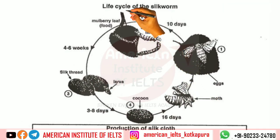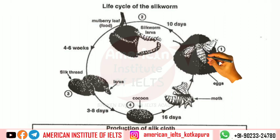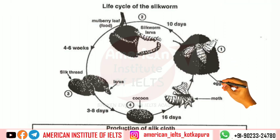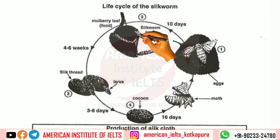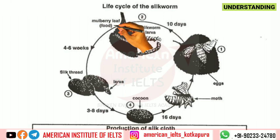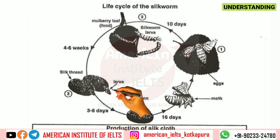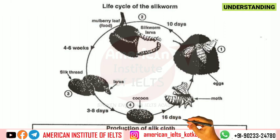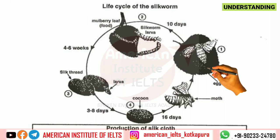First of all, it is a life cycle which has 5 stages. In the first stage there is a moth, an adult fly, which lays eggs. After 10 days, a silkworm larva emerges which feeds on mulberry leaves. After 4 to 6 weeks, a silk thread forms and the larva gets wound up. After 3 to 8 days this becomes a cocoon, then the larva leaves it after 16 days and becomes a moth, which lays eggs again to start a new cycle.